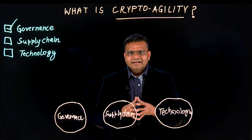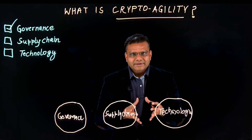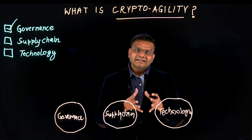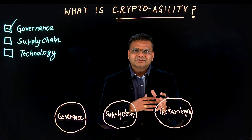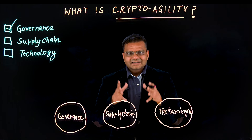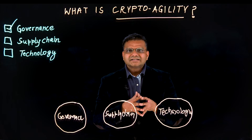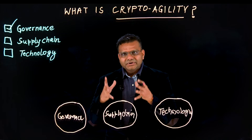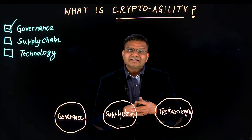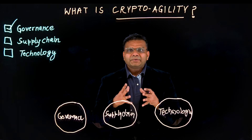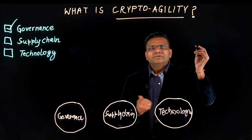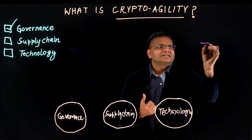Governance encompasses industry-related standards, best practices, selecting the right algorithms based on security needs, and ensuring algorithms comply with regulatory requirements. Cryptography governance also defines the guidelines for algorithm selection, standardization, and periodic reviews — incorporating new standards and retiring outdated ones. The most essential capability for good governance is algorithm adaptability.